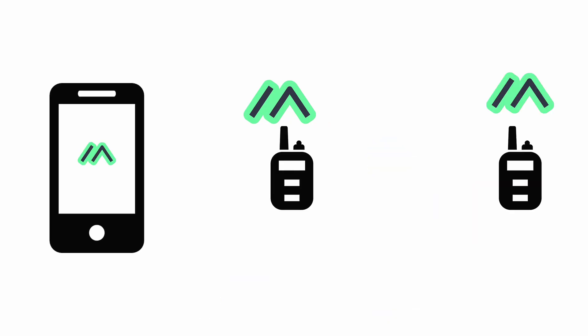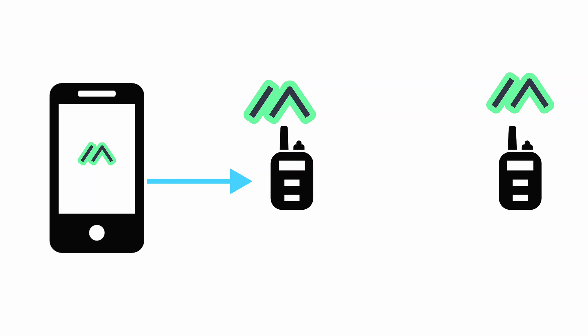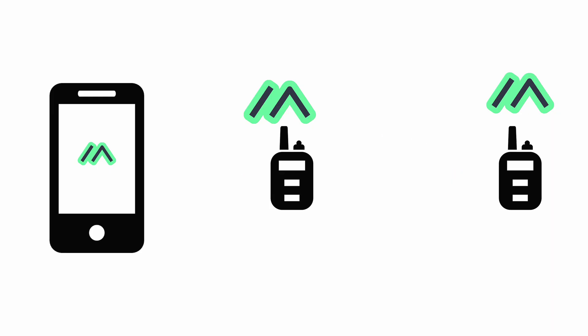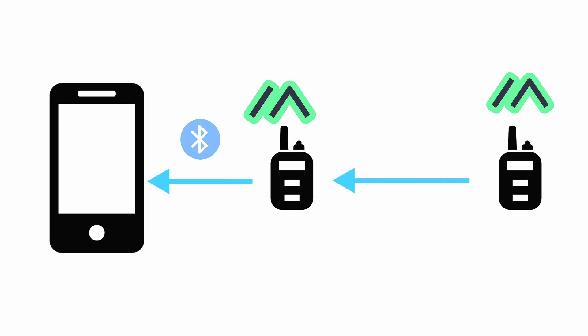While sending a message, your phone will communicate with your Meshtastic radio device over Bluetooth. The Meshtastic device will then transmit that message using LoRa to reach other Meshtastic users. To receive a message, it basically works in the opposite direction — your Meshtastic device receives the message from another user via LoRa radio, then sends it to your phone via Bluetooth.